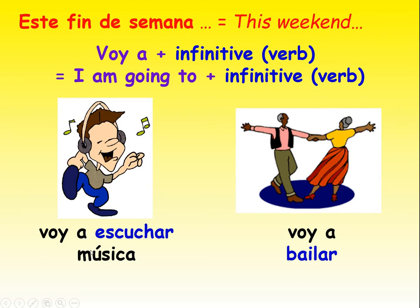So for example: 'voy a escuchar música' - I am going to listen to music. 'Voy a bailar' - I am going to dance. Even though it's me who's going to dance, I don't say 'voy a bailo' because 'bailo' means 'I dance'. That's why we have the infinitive. With past and present tenses, our lives are shorter so we shorten the infinitive - we take the ending off. In the future, our lives are longer, so we keep the infinitive whole.